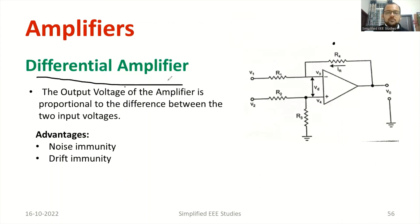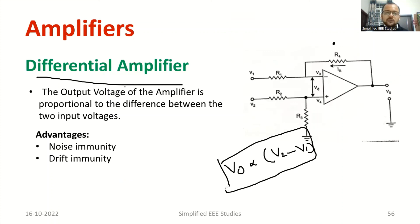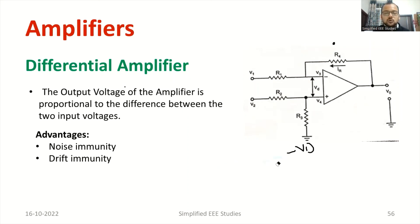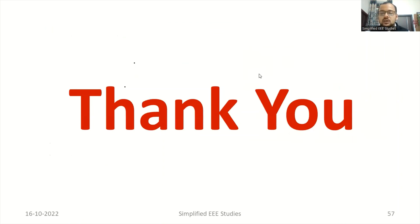Let us talk about another application: the differential amplifier. The output voltage is proportional to the difference between two input voltages — V2 minus V1. This type of circuit is generally known as a differential amplifier. It is mainly used for reducing noise and can be used in various communication circuits. The major advantages are noise immunity and drift immunity.